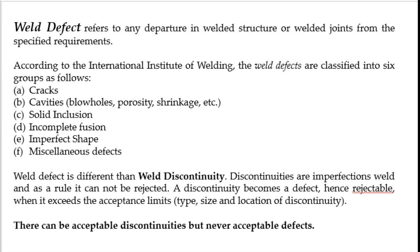Discontinuity will become a defect only if it exceeds the acceptance limits. If the size or location of the discontinuity is beyond the acceptable limit, we call it a defect, and defects are always to be rejected.